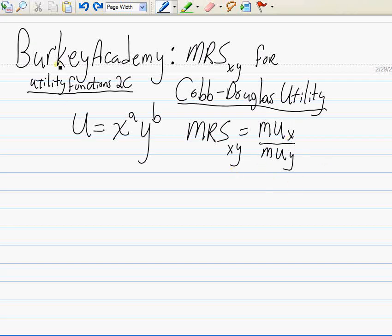To find the marginal utility of x and y, you take the partial derivative with respect to x and then the partial derivative with respect to y, and we're going to end up with something like this.